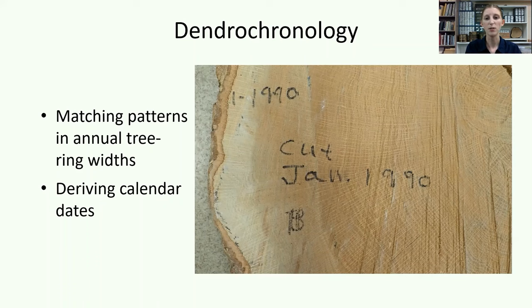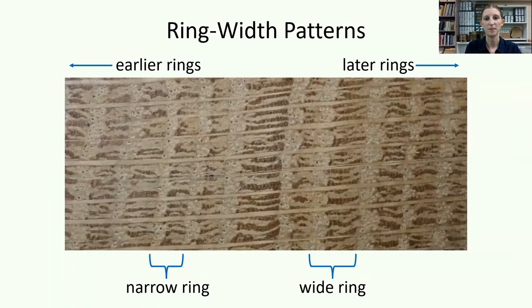Generally, this starts with living trees and recording their sequences of wide and narrow rings. Because the date of the outermost final growth ring is known from the collection year, the rest of the rings can be dated in absolute time. When the ring sequence in wood of unknown date, like a fallen tree or a beam from a log cabin, fittingly overlaps a dated chronology, the pattern stretches deeper into the past and older and older wood can then be dated.